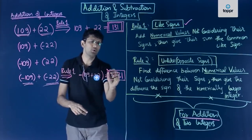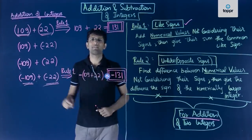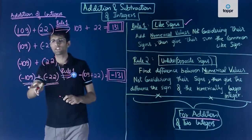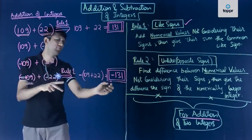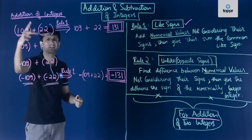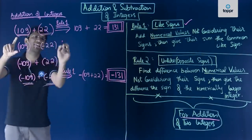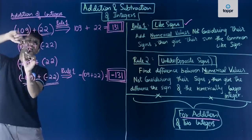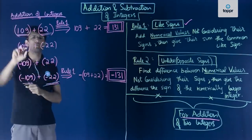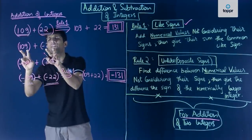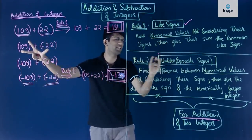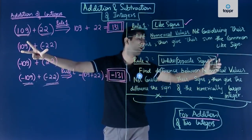So we have seen two cases. When both integers are positive, we get a positive whole number. When both integers to be added are negative, we get a negative number. This is how we apply rule one. Now let us look at the second case, where the first number is positive and the second is negative — these two integers have unlike signs, so we look at rule two.